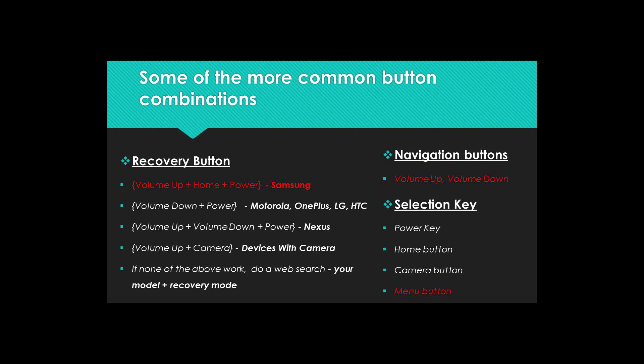Cache wipe needs to be done in recovery mode, and for this we need to know some key combinations specific to your phone to get into recovery mode and to navigate and select options. These are the most common key combinations, and if none of these works, do a web search for your device's recovery key.